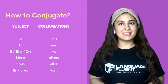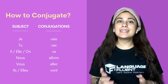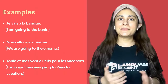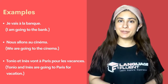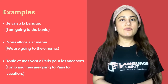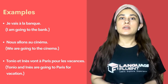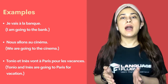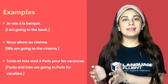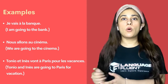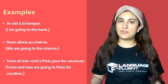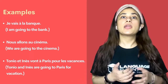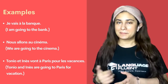Now that we have understood the conjugation, let's have a look at a few examples. Here comes the first example: Je vais à la banque. Which means I'm going to the bank, or I go to the bank.